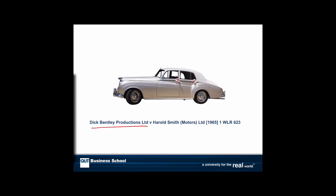To help with that, we have the case of Dick Bentley Productions and Harold Smith Motors. Dick Bentley is looking for a Bentley car in good condition, one that's been well vetted. Harold Smith Motors recommends one to him. He's told the car had one owner — a German Baron — who fitted it with a replacement engine and gearbox, and it had only done 20,000 miles since the replacement. On the basis of that statement, Bentley buys the car, but soon finds out the statement wasn't true — the car had done nearly 100,000 miles since the refit.